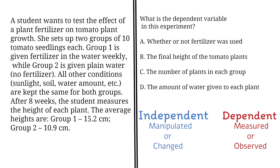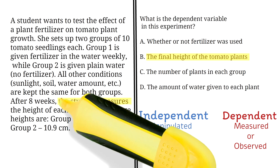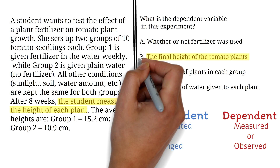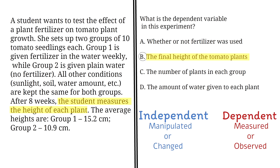According to the passage, the final height of the tomato plants is the dependent variable. This is because the final height is the variable being measured — the student measures the height of each plant. Therefore, B is the correct answer.